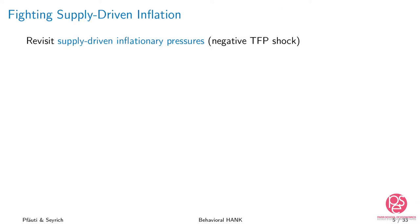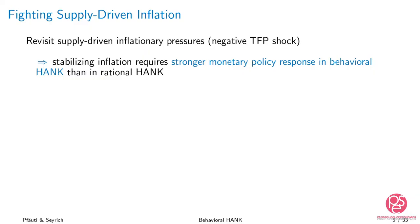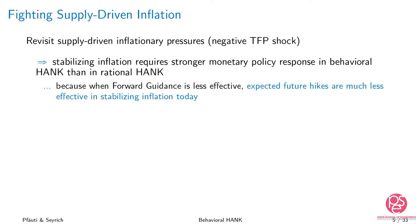Today I will focus on supply-driven inflationary pressures — the kind we are probably observing now, over the last couple of months. Specifically, I will focus on a negative TFP shock. What we find is that if monetary policy wants to stabilize inflation in that environment, it needs to act much more forcefully in the behavioral model compared to the rational model, because forward guidance is much less powerful in the behavioral model.